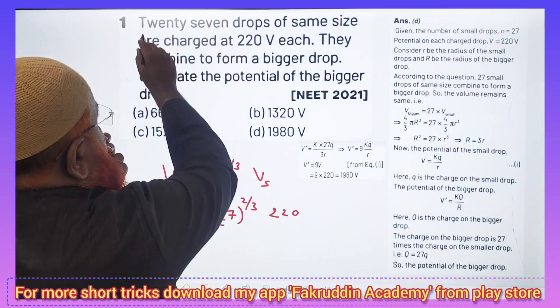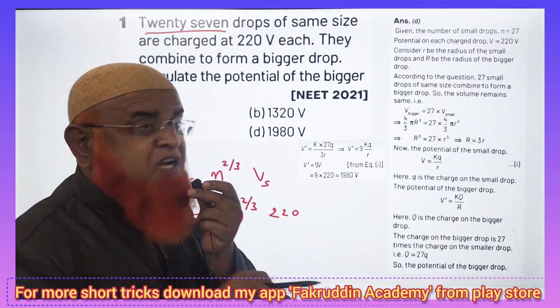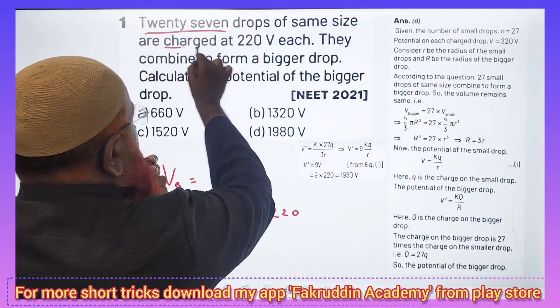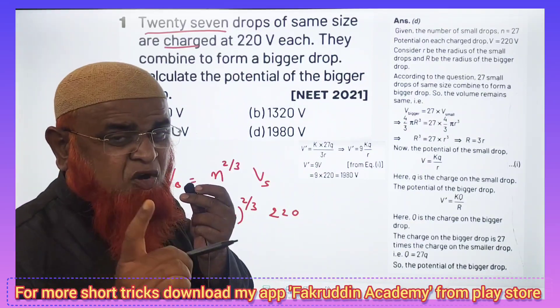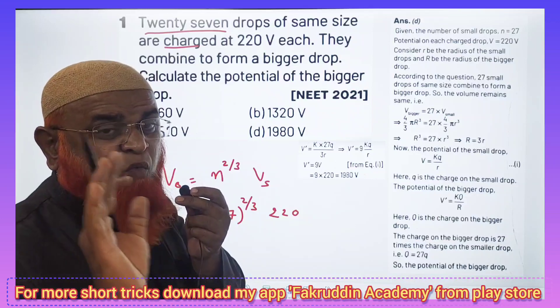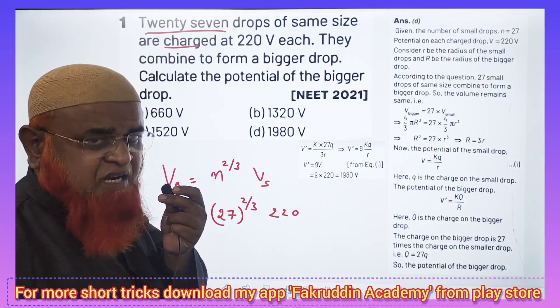For example, in the problem it is given that 27 drops combine to form a single drop. Then what is the potential of that drop? That is the question actually.